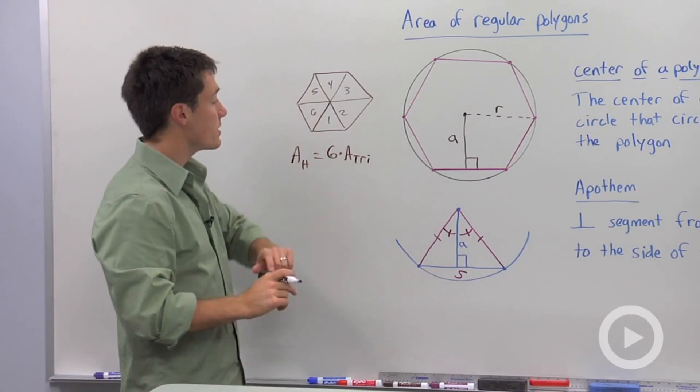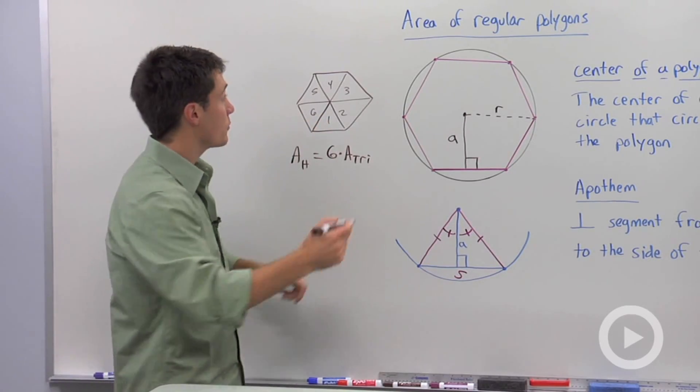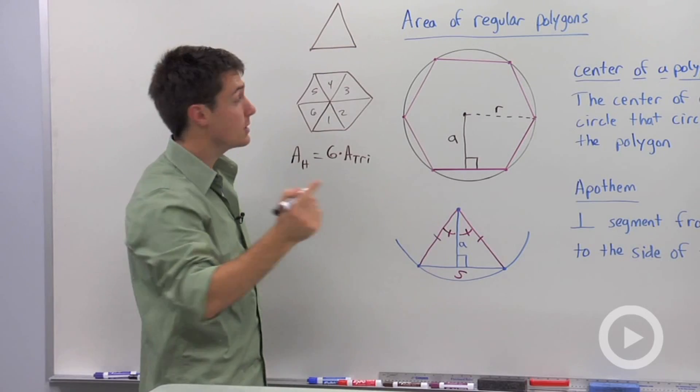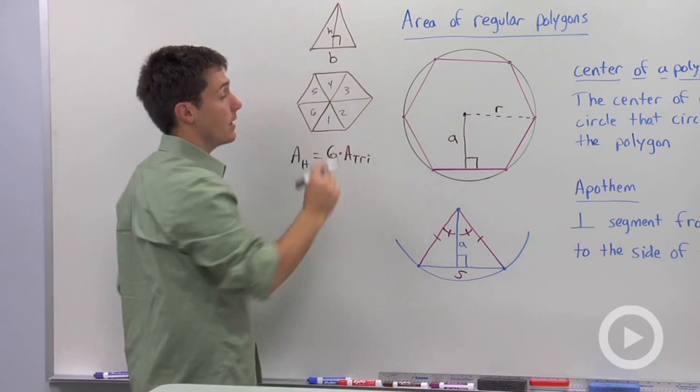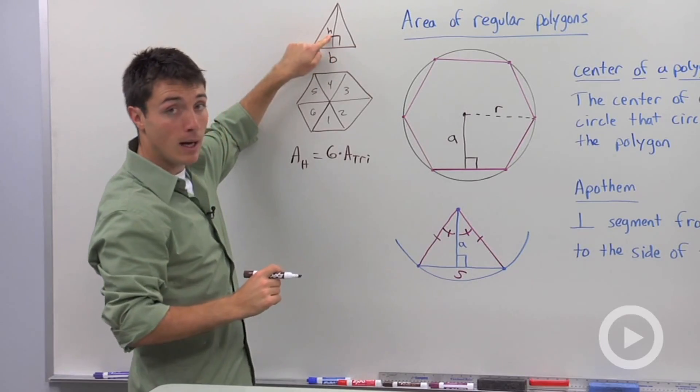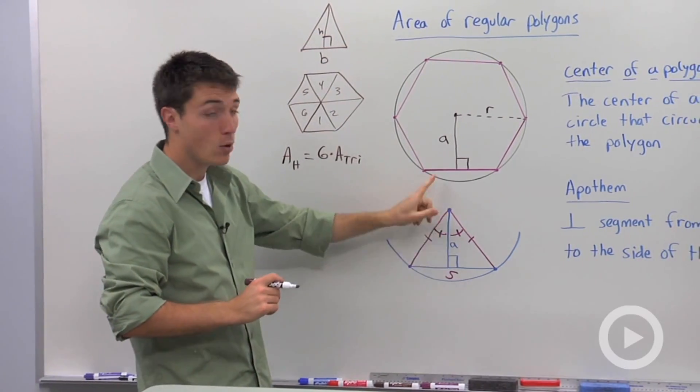But how do we calculate the area of one of those triangles? Well, if you recall, in order to calculate the area of a triangle, you need two things. You need the base and its corresponding height. So that's why we need the apothem, because the apothem is that corresponding height.